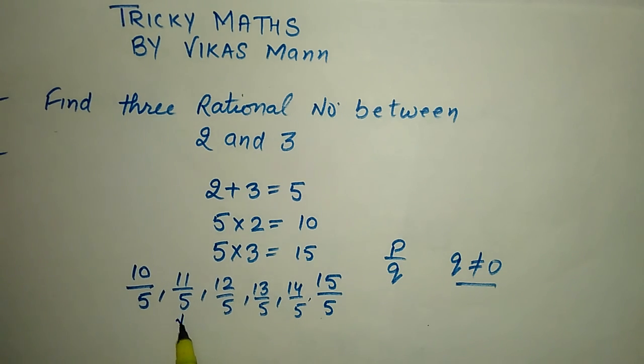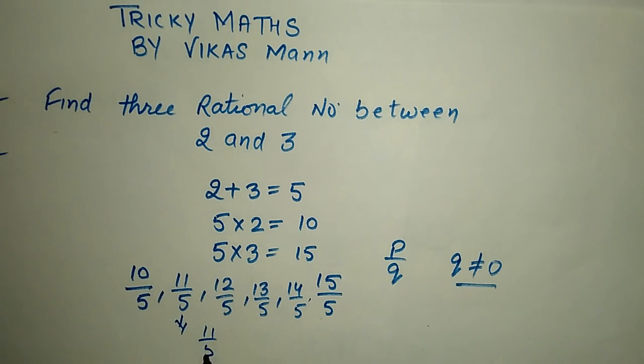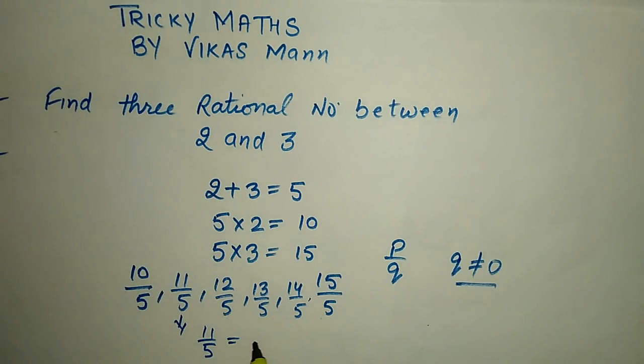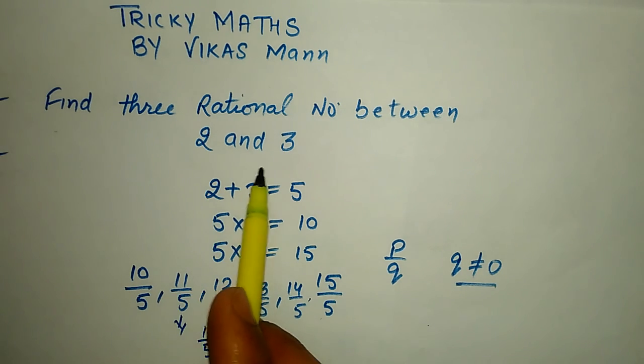If we check 11 by 5, then we will get, if we divide this with 5, 5 to the 10 and then 0.5 to the 10, we will get 2.2. That is between 2 and 3.